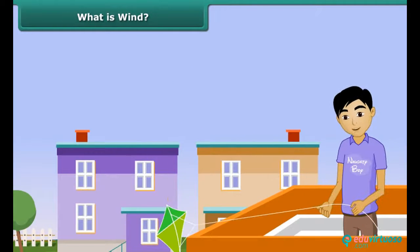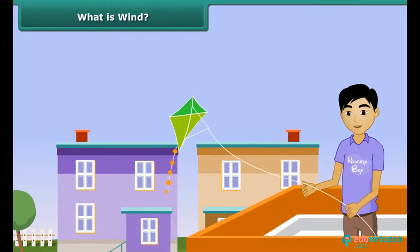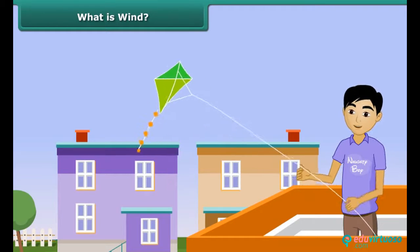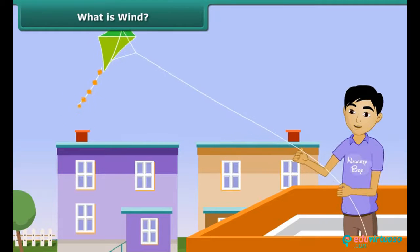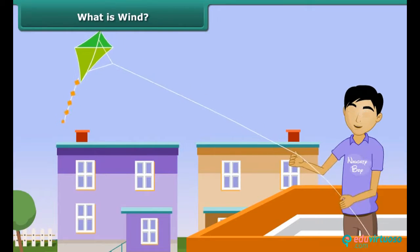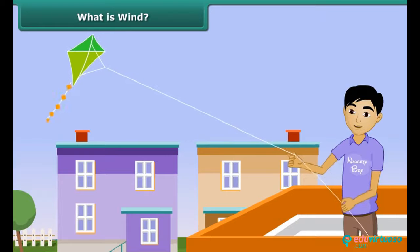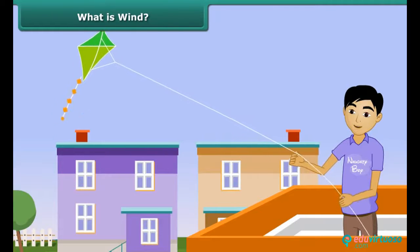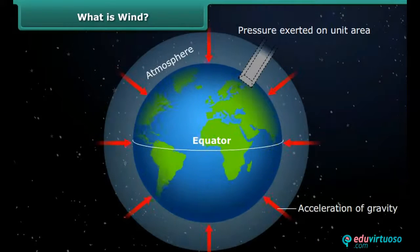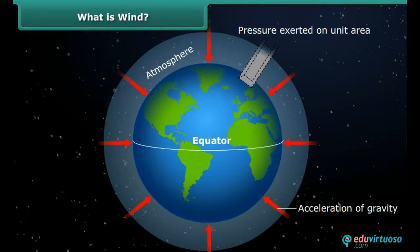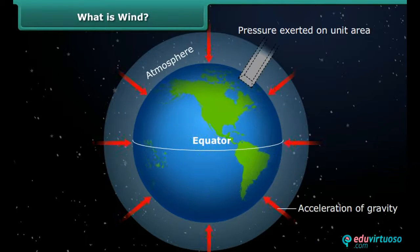Ankit is trying to fly a kite, but the kite is not flying. What does he need to do? He should fly the kite in the direction of moving air. Moving air helps the kite climb in the sky. We call this moving air as wind. What causes air to move? It is caused by differences in air pressure within our atmosphere.